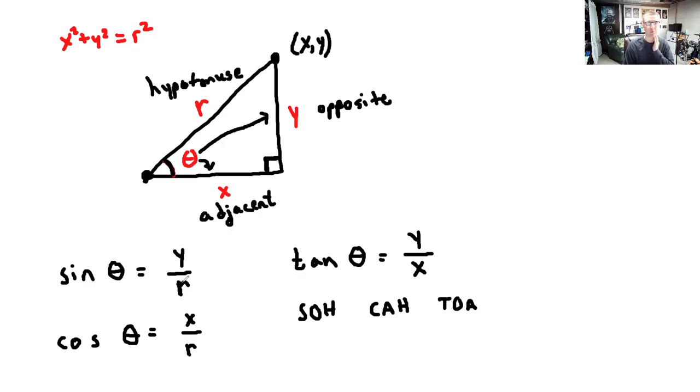What about the reciprocal identities? Well, cosecant would be radius over y, radius over opposite. So cosecant is the hypotenuse over the opposite. Secant, it's the reciprocal of cosine, so that's r over x, which is secant is the hypotenuse over the adjacent side. And cotangent is adjacent side, so x over y, which is the opposite side.